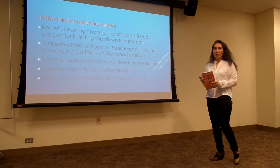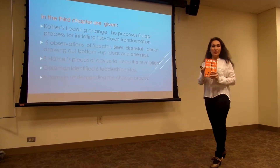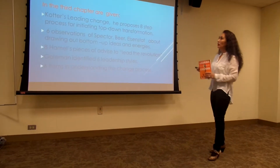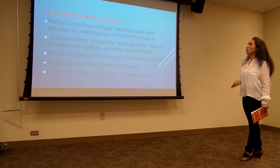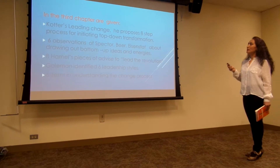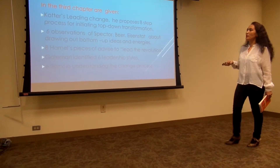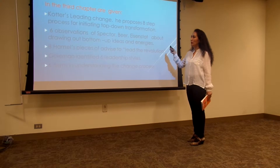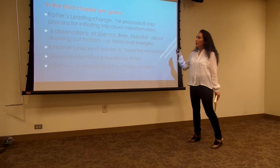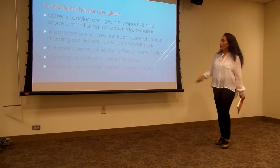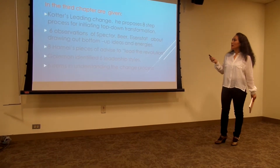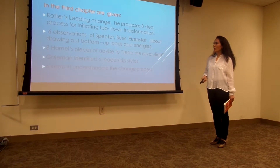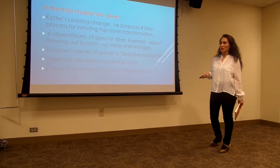In the third chapter of this book, Kotter's leading change is covered. He proposes an eight-step process for initiating top-down transformation, and six observations about drawing out bottom-up ideas and energies.